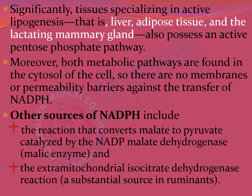In sites of active lipogenesis — such as the liver, adipose tissue, and lactating mammary glands — a very active HMP shunt pathway is also found. Both the lipogenesis pathway and the HMP shunt are located in the cytosol of the cell, so there is no membrane or permeability barrier against the transfer of NADPH from the HMP shunt to the lipogenesis pathway.